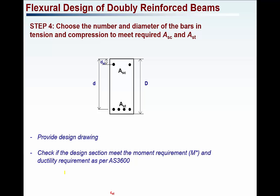The final remaining step is to provide the required number of bars and diameter of bars so that the ASC and AST requirements are met — choose the number and diameter of bars to satisfy the reinforcement requirements. Then provide a detailed drawing with all the dimensions. Finally, check the design: redo all the calculations, find the KU value for this scenario, and verify that the beam is ductile and that the moment capacity is satisfied.